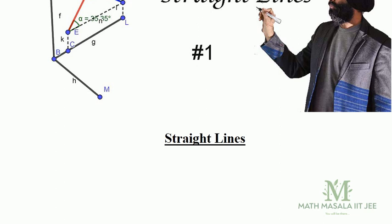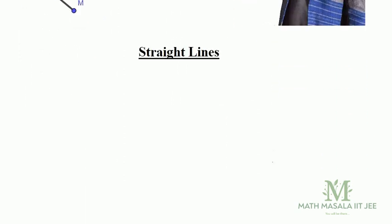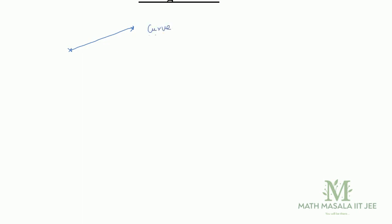So first of all, let's see what a straight line is. If I say that this is one point, and this is another point, and between these two points there is a line segment — what do we say about this line segment? It is some curve. Until I know the definition of a straight line, I cannot say that it is a straight line. For me, this is a curve.